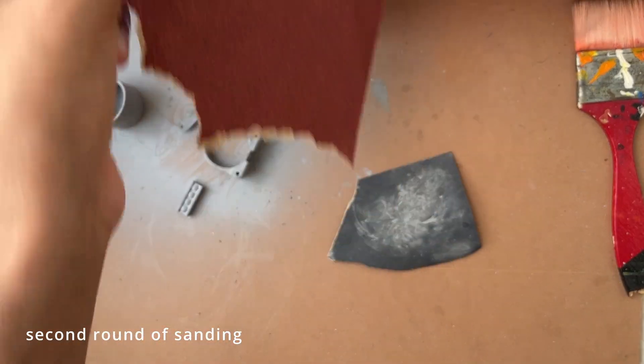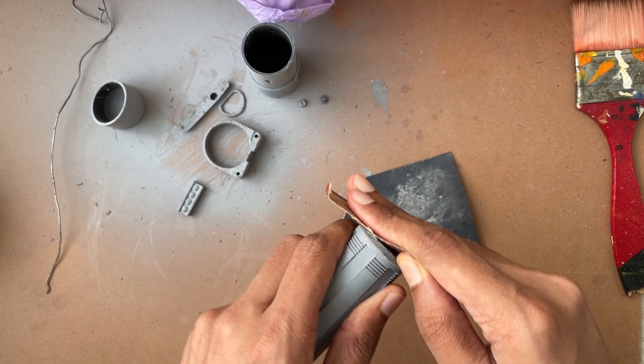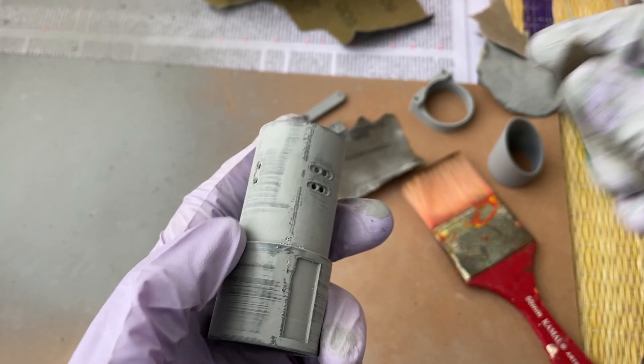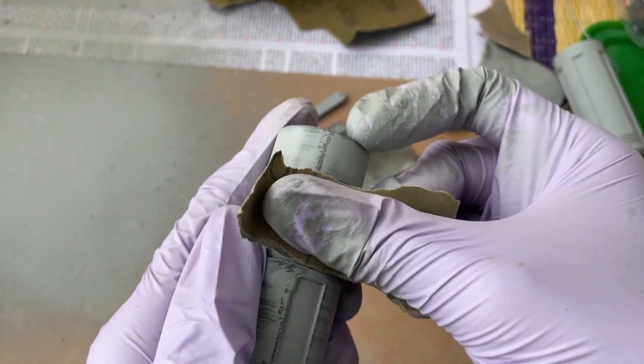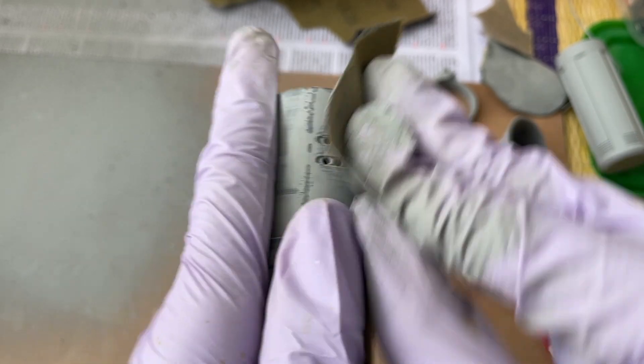Now here I am using a 100 grit sandpaper to get the putty sanded down a little bit more on the thicker parts. And once that's done, you can try using a 600 or a 400 grit sandpaper. Here I'm switching between both of them. This is about two to four hours of sanding.